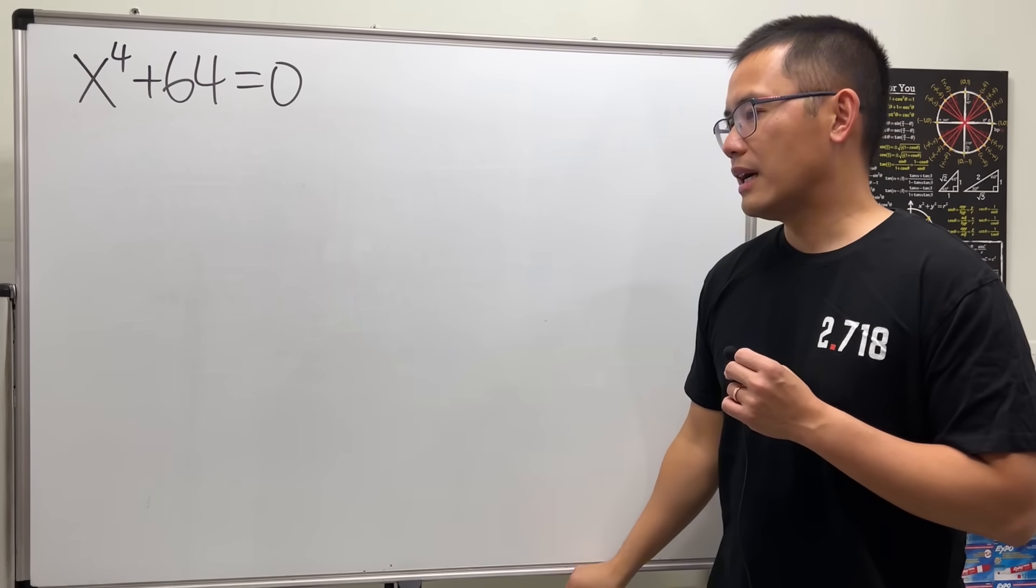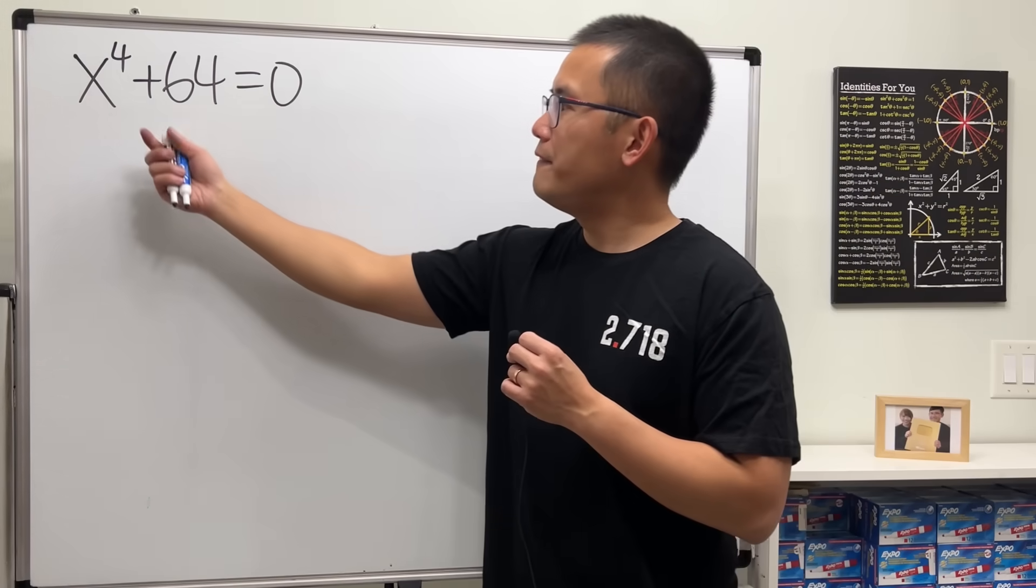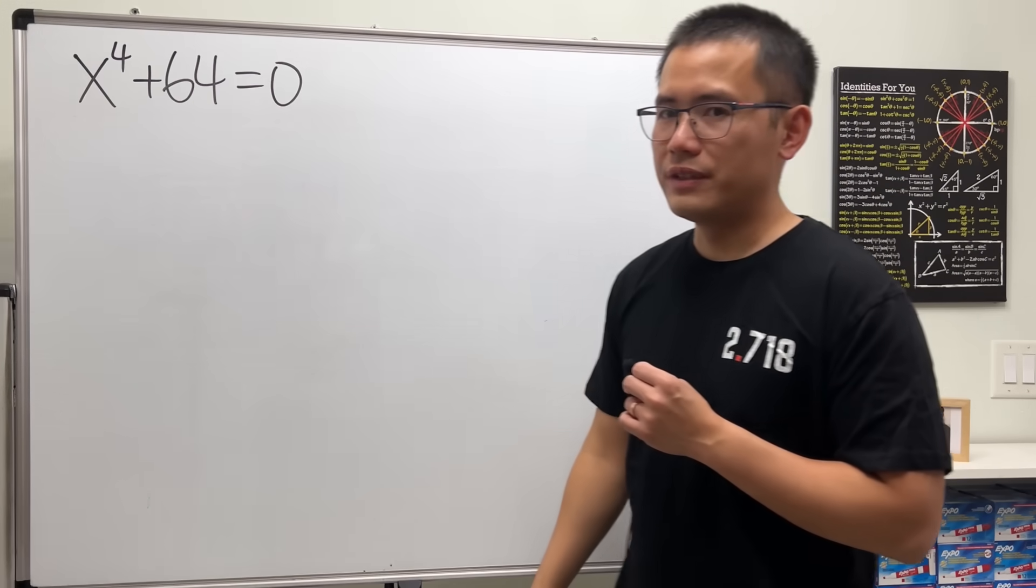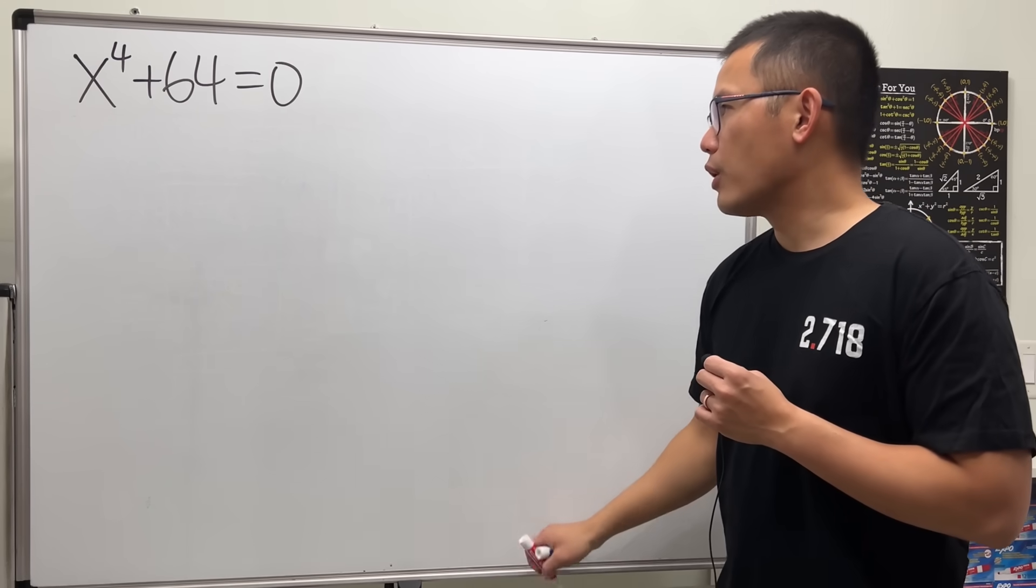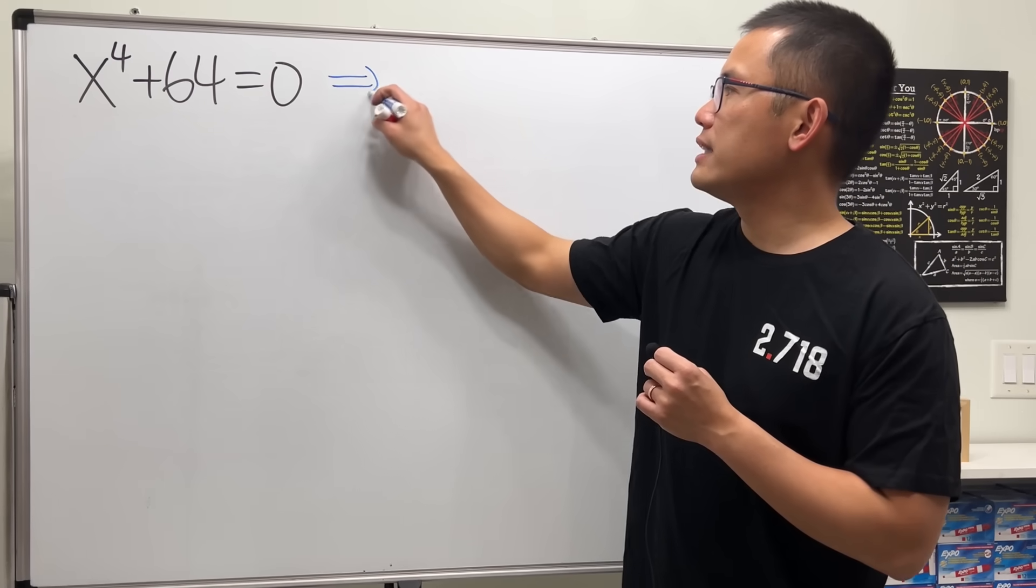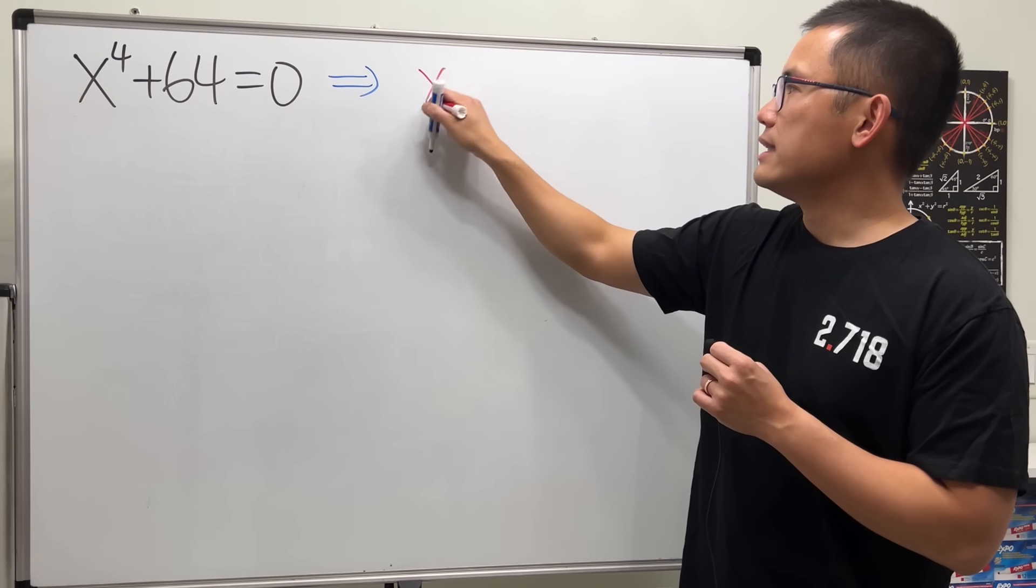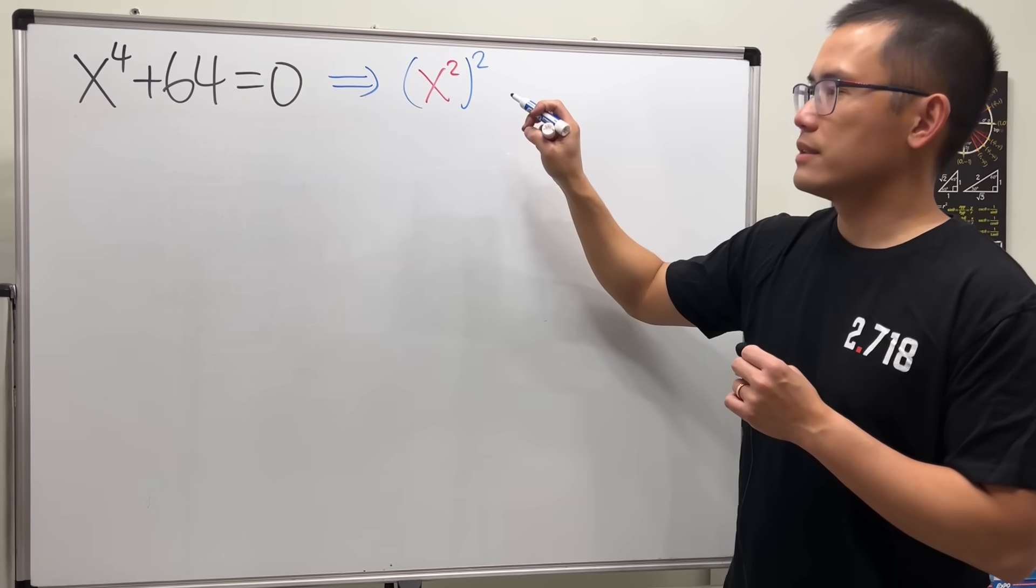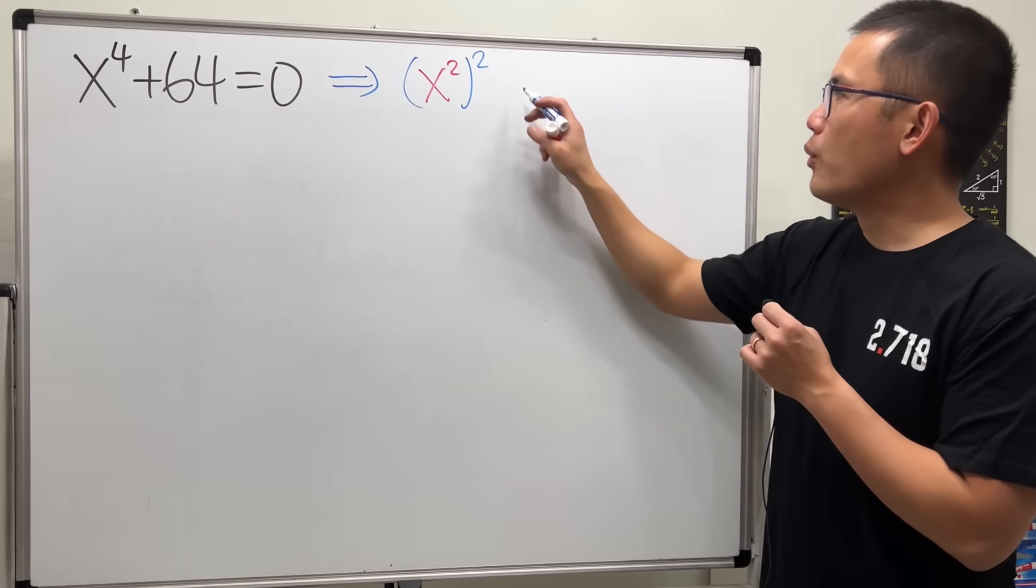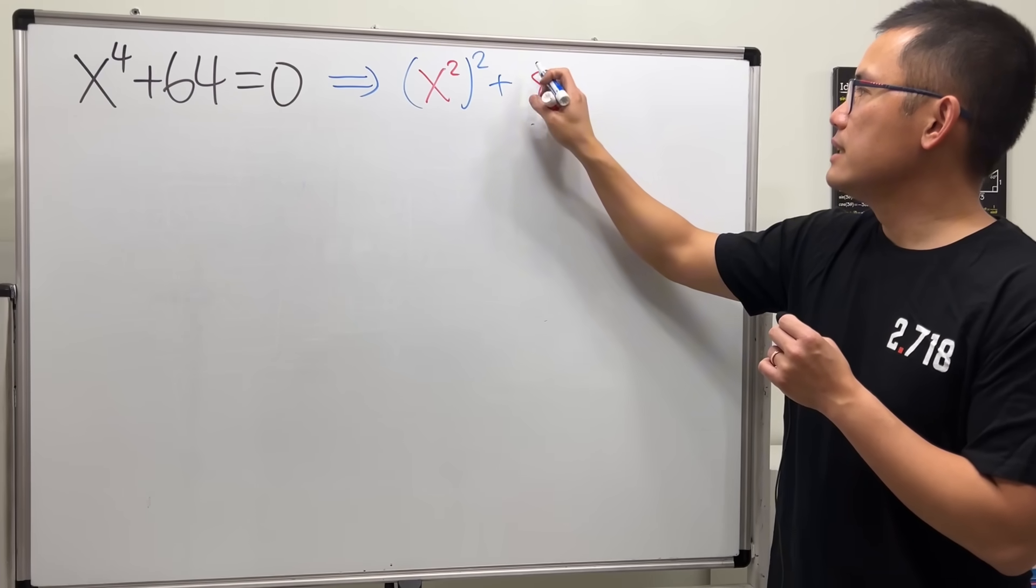And let me show you guys how we can actually factor this right here to solve this equation. To do so, we are going to first look at x to the fourth power as x squared squared. And then for the 64, it's 8 and then squared.